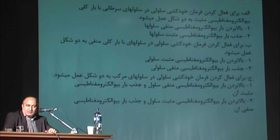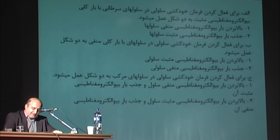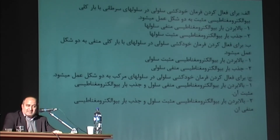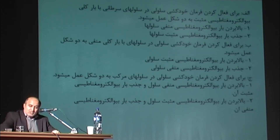To activate the cellular suicide command in cells with an overall negative charge, it also acts in two forms: 3. Increasing the cellular positive bioelectromagnetic charge; 4. Absorbing the negative bioelectromagnetic charge. To activate the cellular suicide command in compound cells, it functions in two forms: 1. Increasing the cellular negative bioelectromagnetic charge and absorbing its positive bioelectromagnetic charge; 2. Increasing the cellular positive bioelectromagnetic charge and absorbing its negative bioelectromagnetic charge.